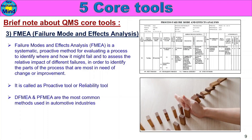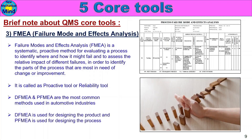DFMEA and PFMEA are the most common methods used in automotive industries. DFMEA is used for designing the product or design parameters. PFMEA is used for process design.